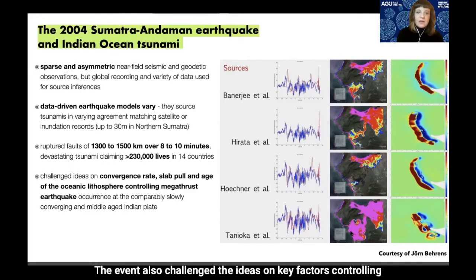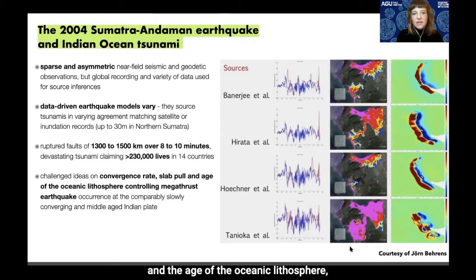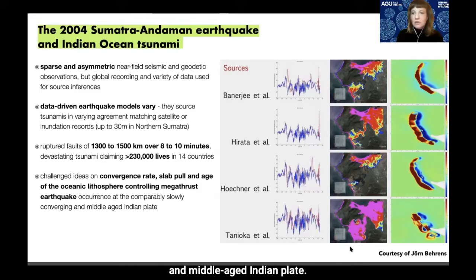The event also challenged ideas on key factors controlling the occurrence of large megathrust events — previously identified as convergence rate, slab pull, and the age of the oceanic lithosphere — since it occurred on a comparably slowly converging, middle-aged plate.